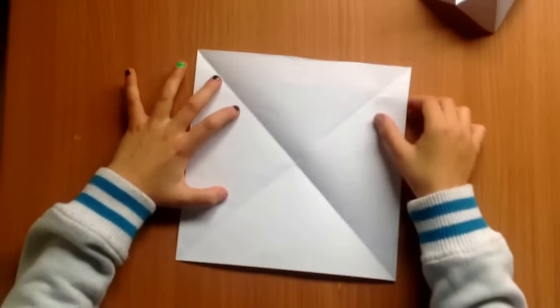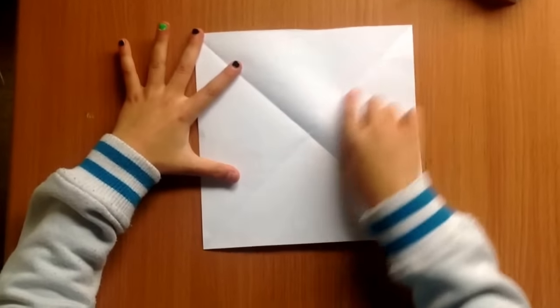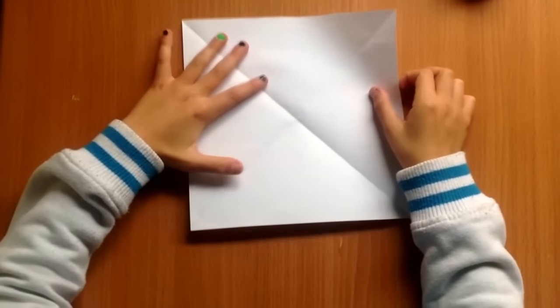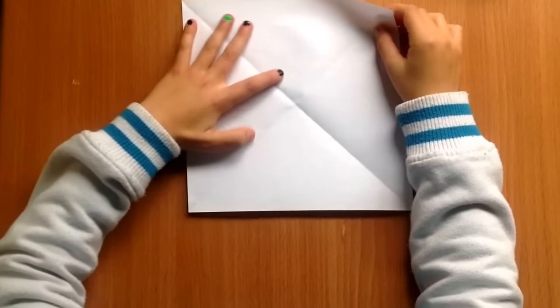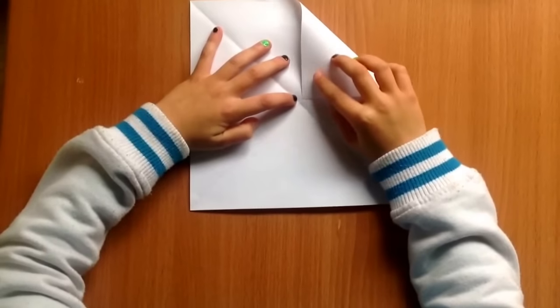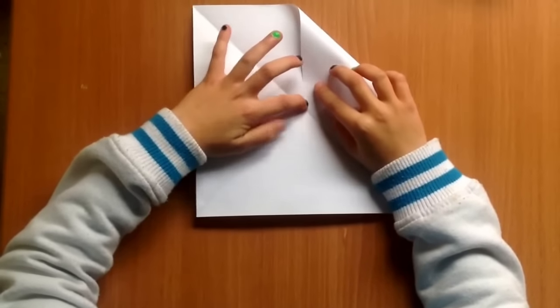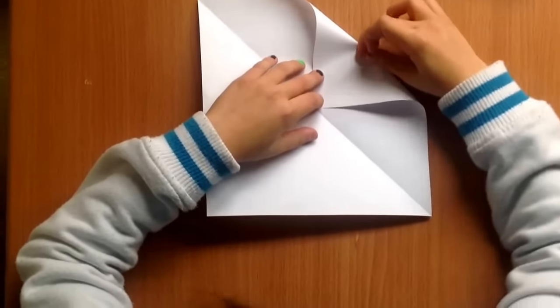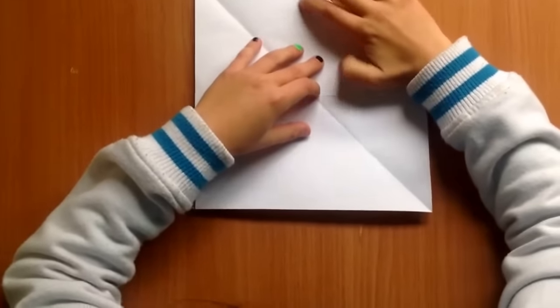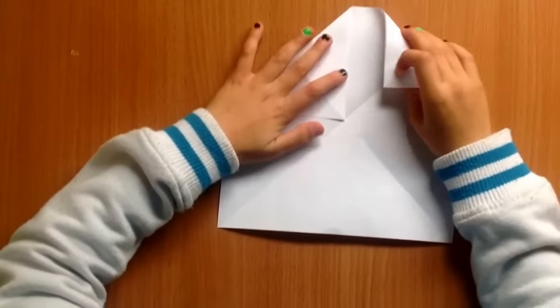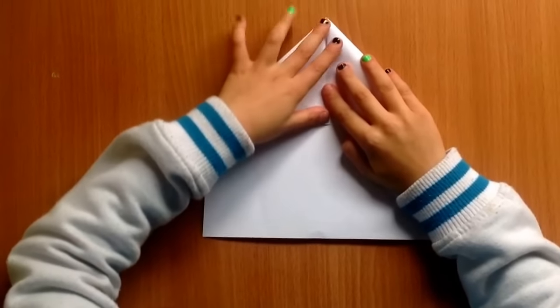Step 2. You should see an X across your paper. Now get one of the corners and bring that into the middle and crease it. Do the same with all four corners.